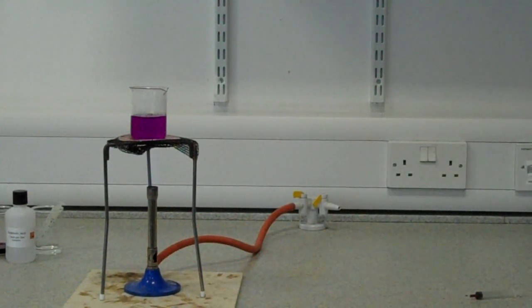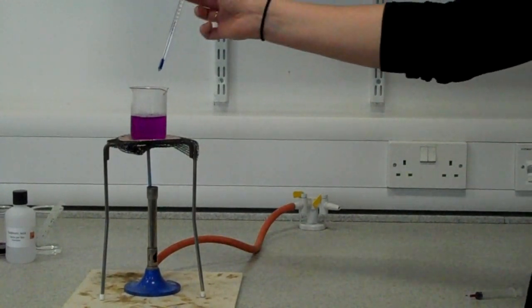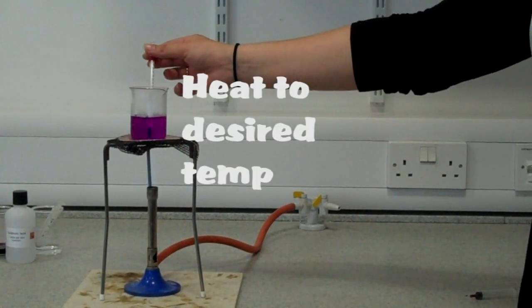We take the beaker from the tripod before it reaches 40 degrees as the heat from the glass will raise the temperature, and we stir the mixture for an even heat distribution.